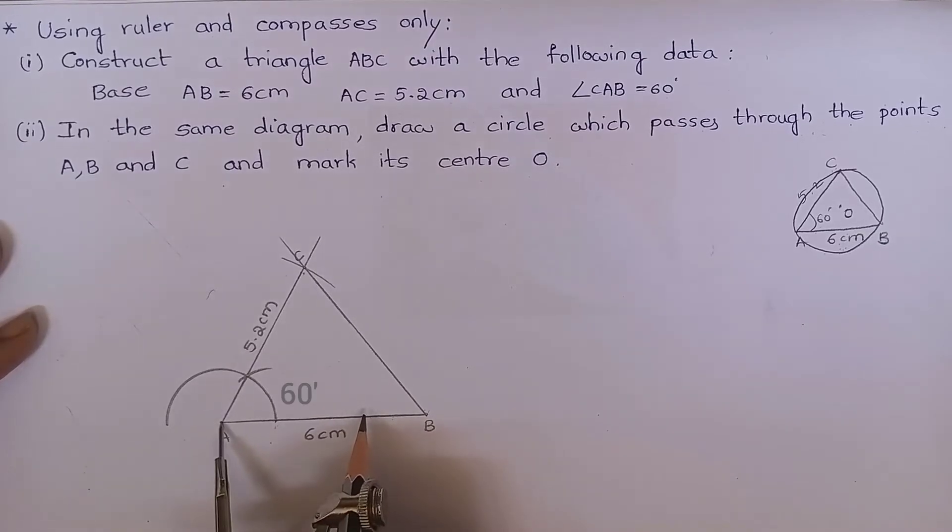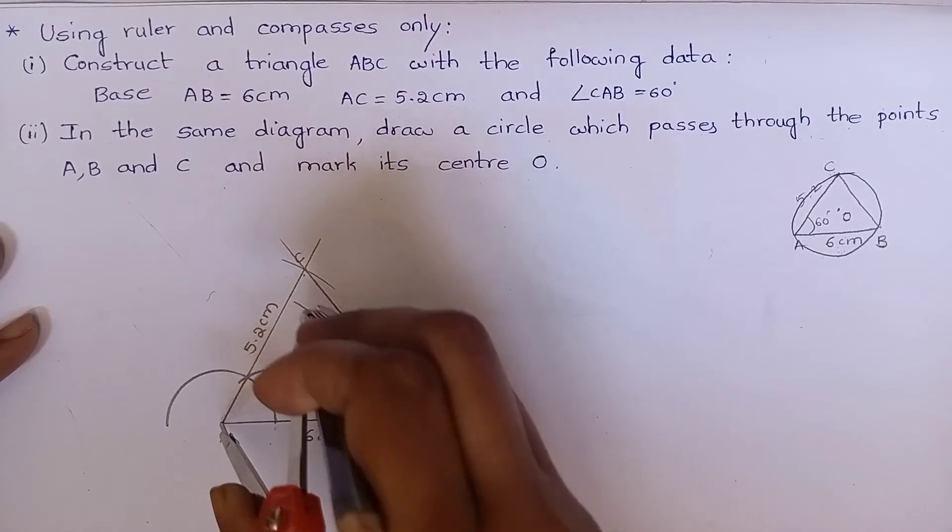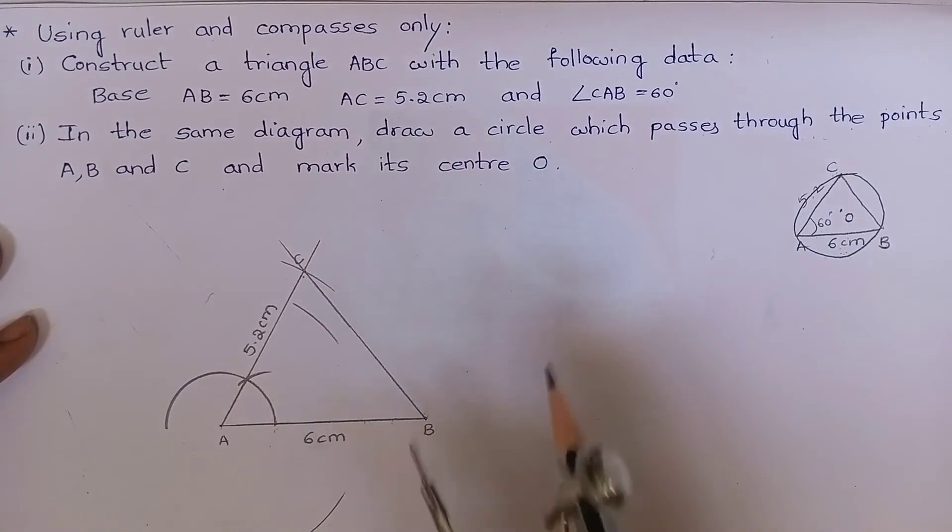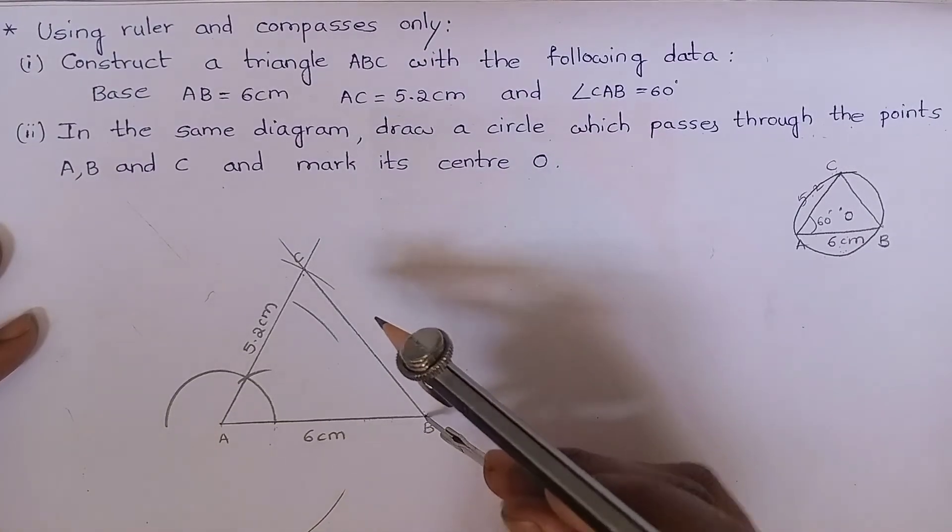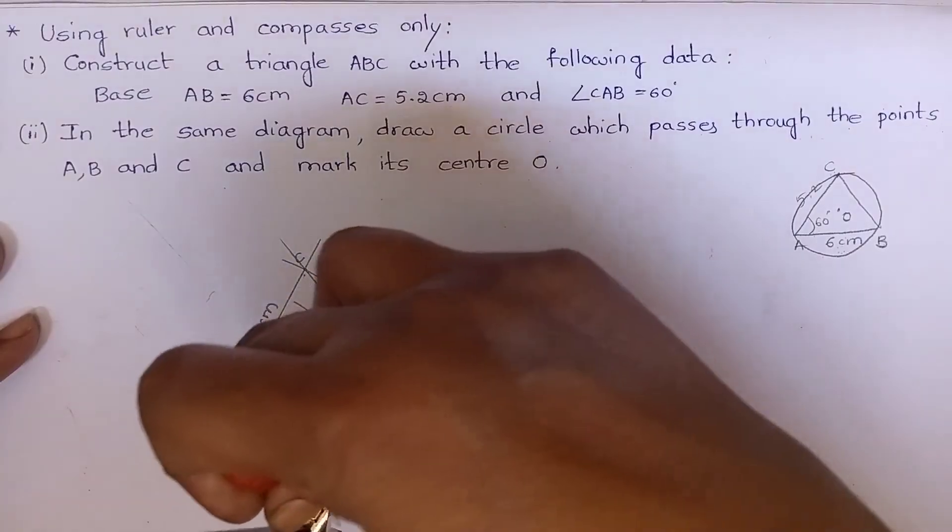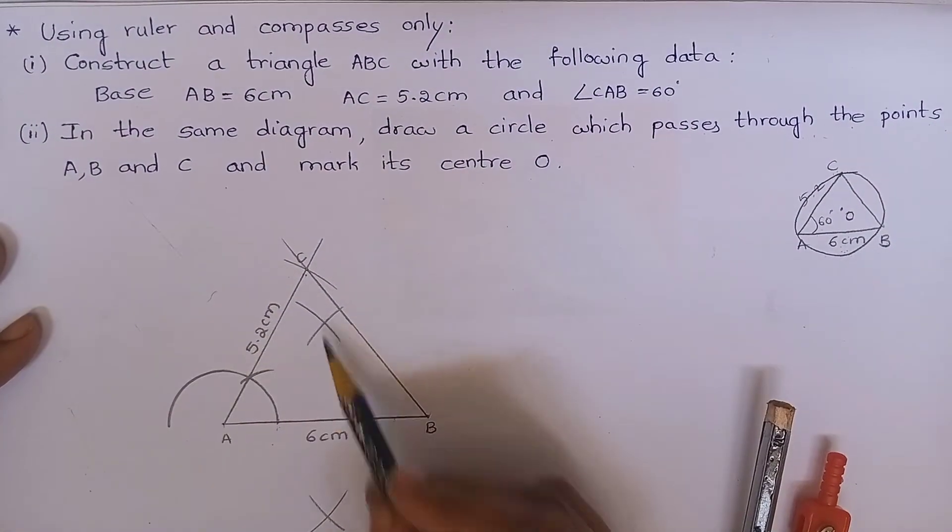Cut an arc like this. Keep the compass at point B and cut an arc like this. Join these two points.